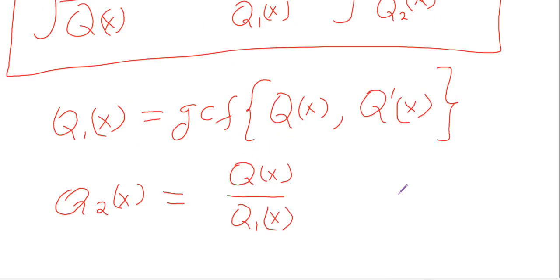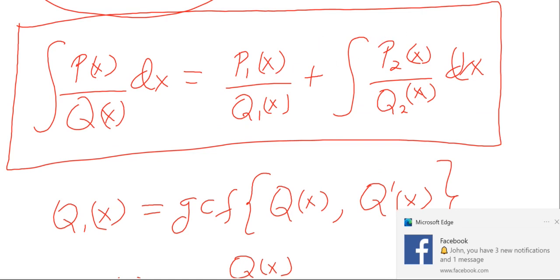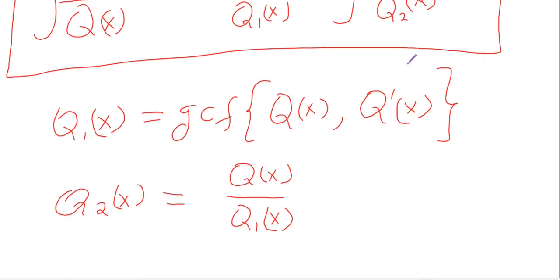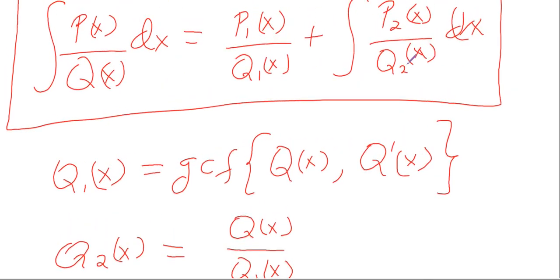The polynomials P1 and P2 are obtained such that P1 is at least one degree less than Q1, and P2 is one degree less than Q2. So if Q1 is a polynomial of degree 1, then P1 will be a constant. If Q1 is a polynomial of degree 2, P1 will be a polynomial of degree 1, and so on. The same applies to P2 and Q2.